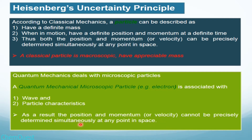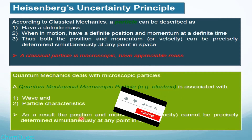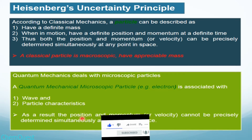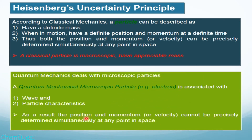The meaning of 'simultaneously' is: if we want to be 100% sure about the position of an electron — where the electron is present inside the nucleus — then the more certainty we have about its position, the more uncertain we will be about its velocity or momentum. And if we are certain about its velocity or momentum, then we cannot be sure about its position. This is basically the concept of Heisenberg's Uncertainty Principle.